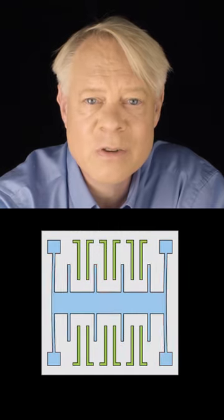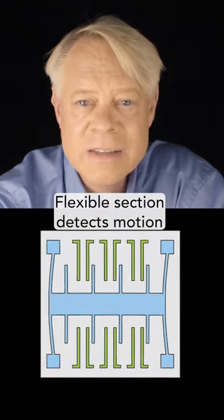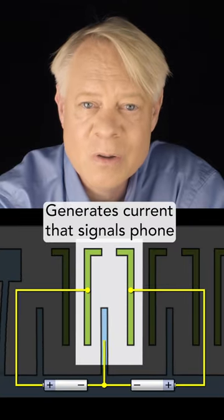This comb-like section moves back and forth as the phone moves. As it oscillates between these fixed sections, it causes current to flow.